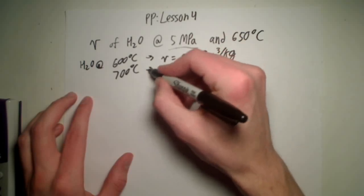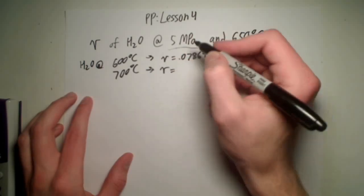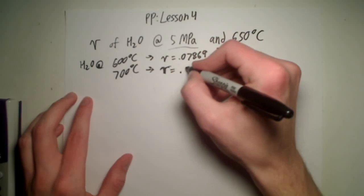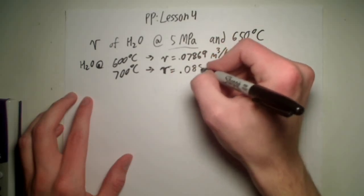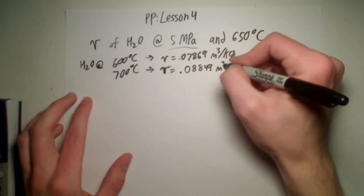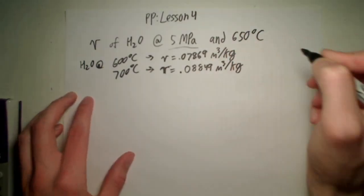And for 700 degrees Celsius, the specific volume is 0.08849 meters cubed per kilogram.